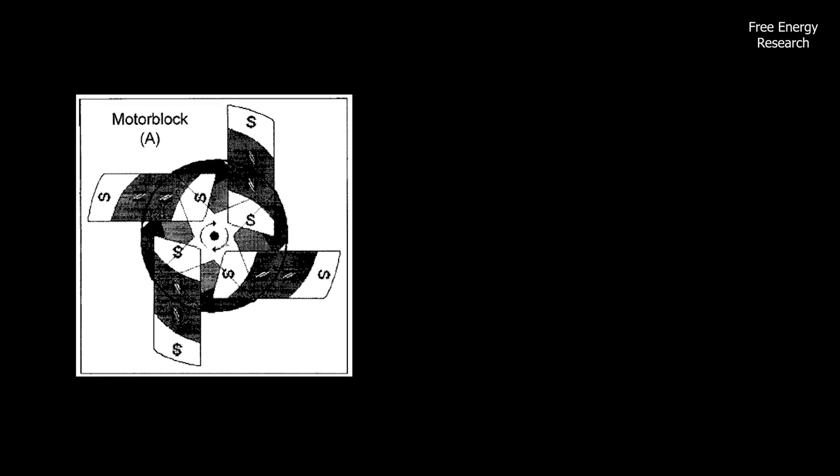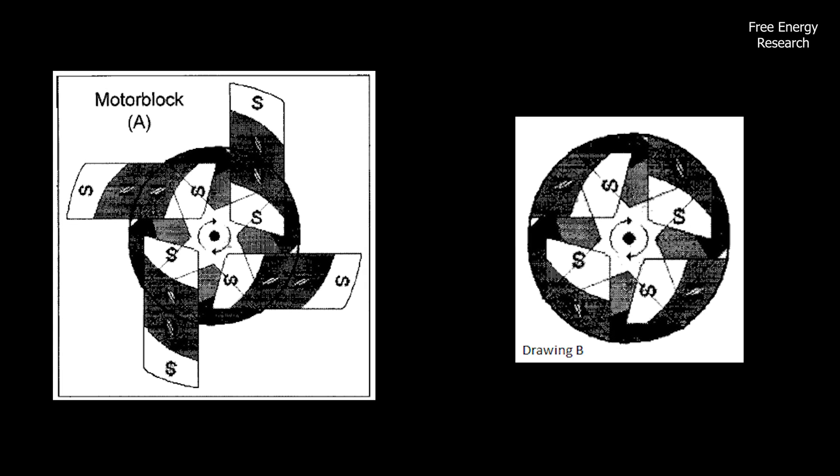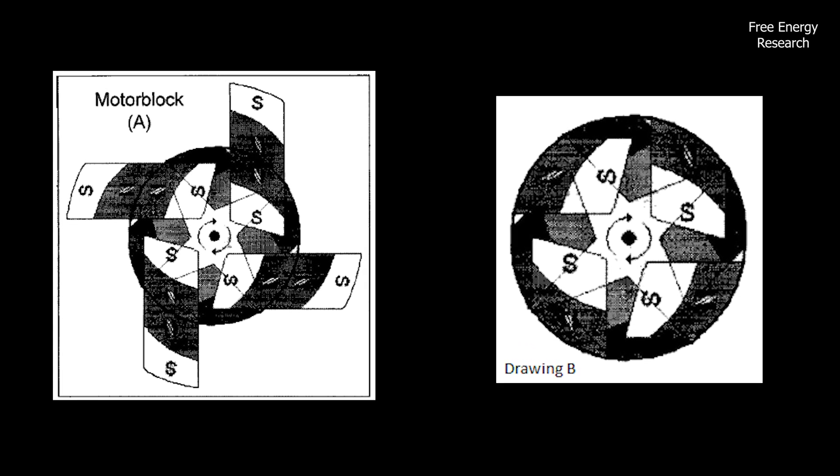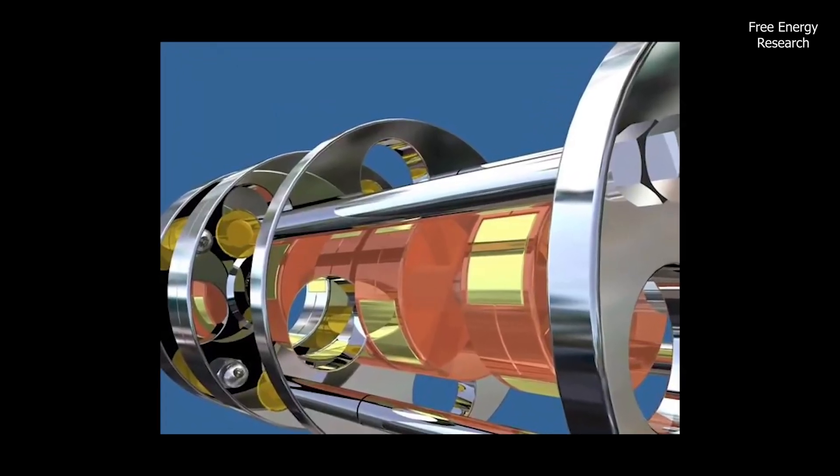The permanent magnets are mounted in the engine block, drawing A, in such a way that they repel the permanent magnets in the inner cylinder, drawing B. This causes the inner cylinder, drawing B, to rotate.